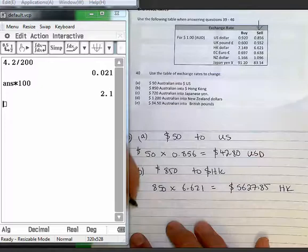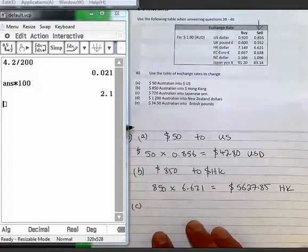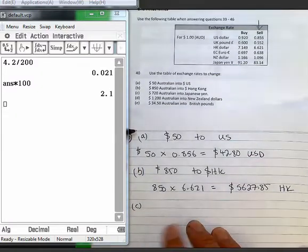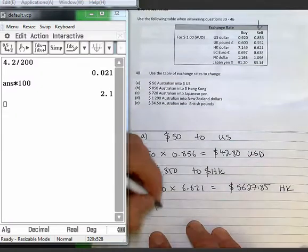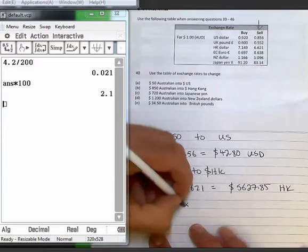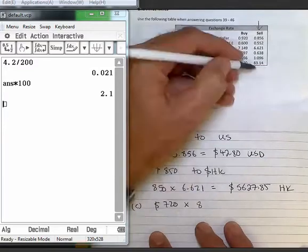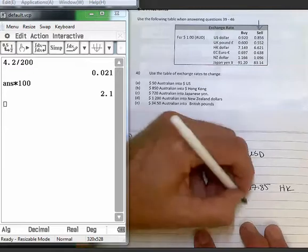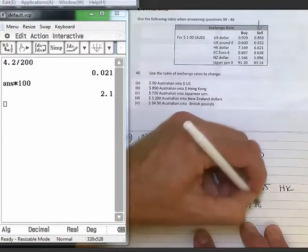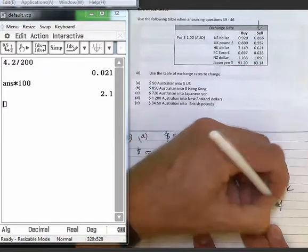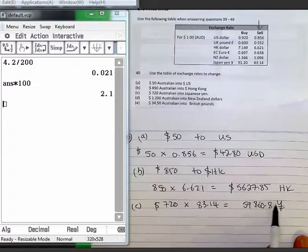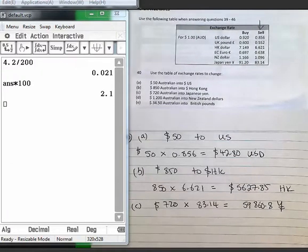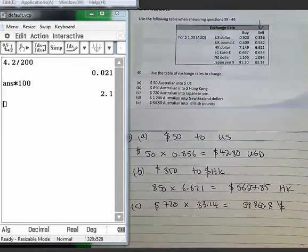And to see, 720 Australian into yen. So 83.14, carrying out that multiplication. The symbol for yen, if you're interested, is a Y with two strikes across. Take some time to work the rest of these questions from number 40.